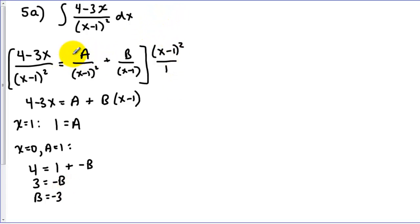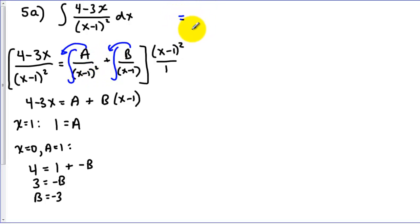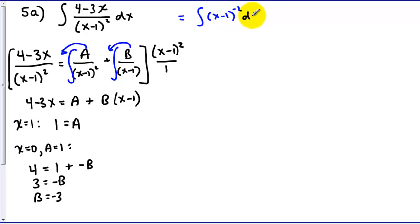Now when I do the integration step, I'm going to pull these constants out to the front. On this one I've got a u to the nth power — I need to bring that to the top. So I'm rewriting: the A was 1, so that's out front, and I'm moving the x minus 1 squared to the top. When you move something from the bottom of a fraction to the top, remember we change the sign of the exponent. And for our second fraction, we have negative 3 times the integral of 1 over x minus 1.